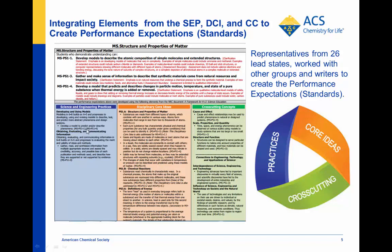You can tell by going back down to the foundation boxes and looking for references to MSPS 1-4. For example, in the disciplinary core ideas: 'Gases and liquids are made of molecules or inert atoms.' In science and engineering practices, MSPS 1-4 is: 'Develop a model to predict and describe phenomena.' And for cross-cutting concepts, MSPS 1-4 refers to cause and effect relationships. The cross-cutting concepts are usually not as explicit as the other two, but cause and effect is there — the standard is about particle motion being affected by adding or removing energy, even though the words 'cause and effect' aren't explicitly stated.